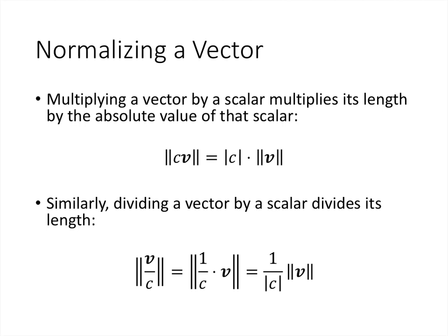A nice property of the norm is that if we multiply a vector by a scalar, that scales the length. So if we double a vector, that doubles its length; if we multiply by one-half, that cuts the length in half. We have to be careful because we can multiply by negative scalars, but length is not allowed to be negative. So multiplying by negative 3 triples the length — that's why we take the absolute value of the scalar.